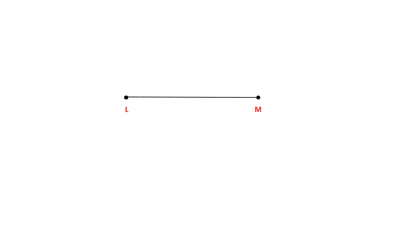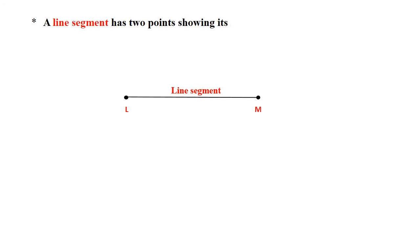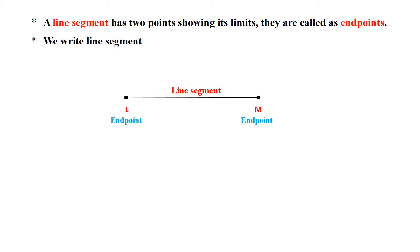If we have two different points and we want to join them, then this straight line is called a line segment. A line segment has two points showing its limit and they are called end points. We have the end points as point L and point M. We write a line segment as segment LM in short.